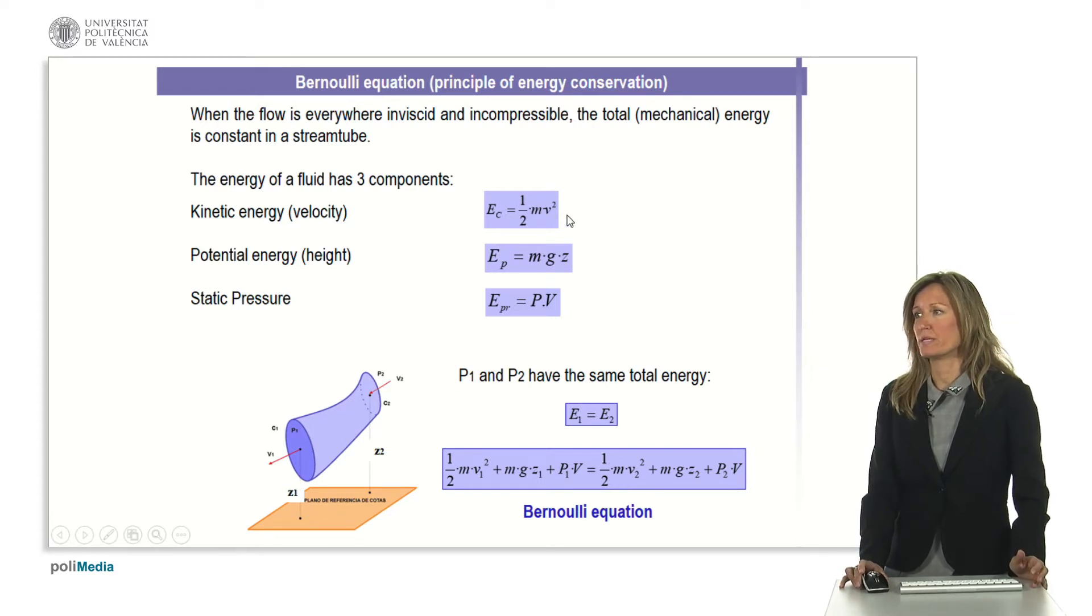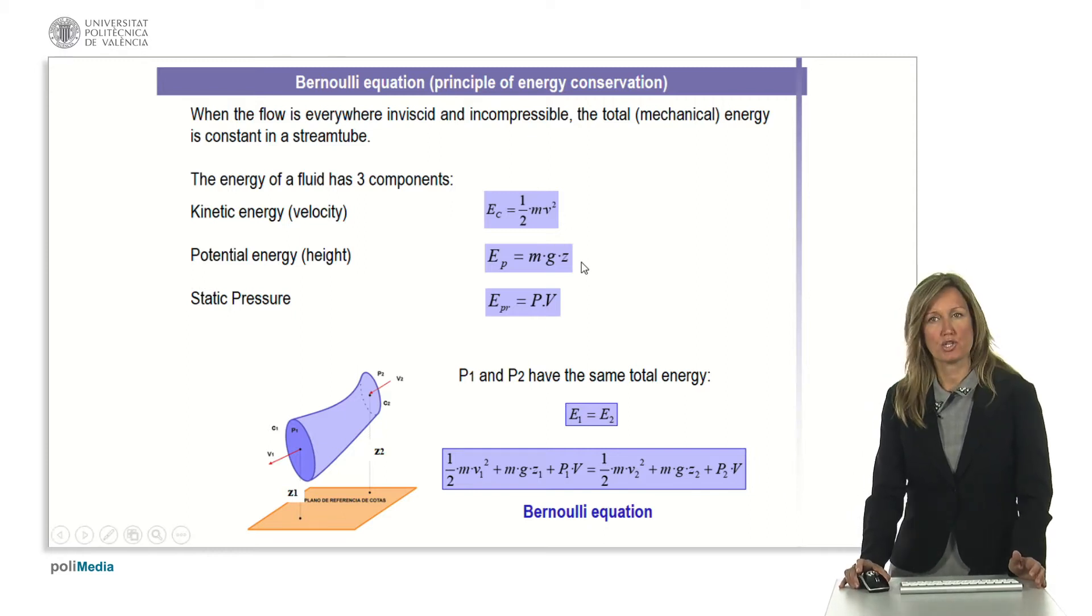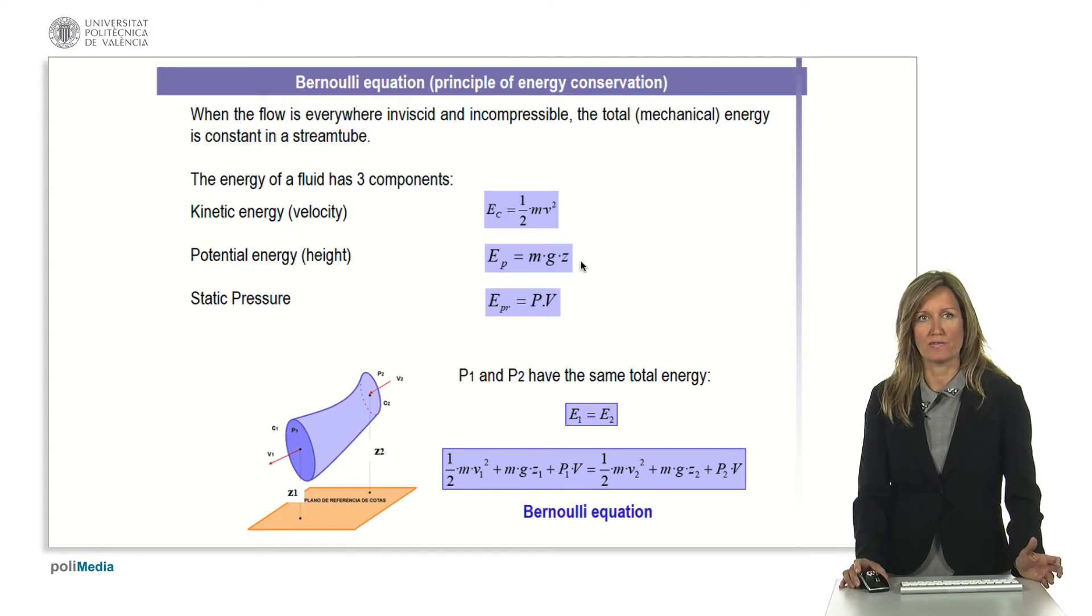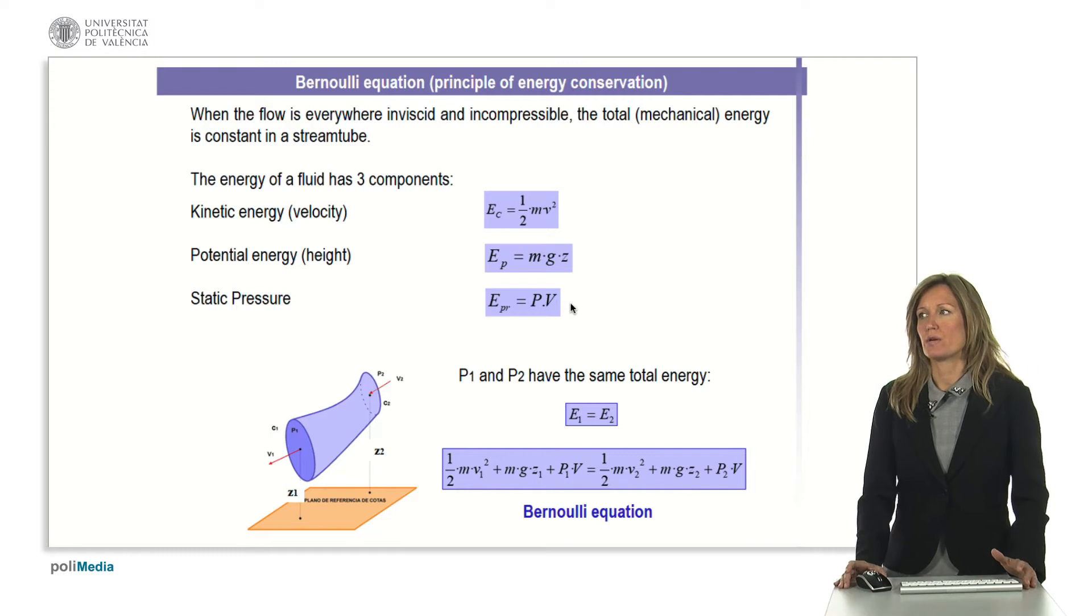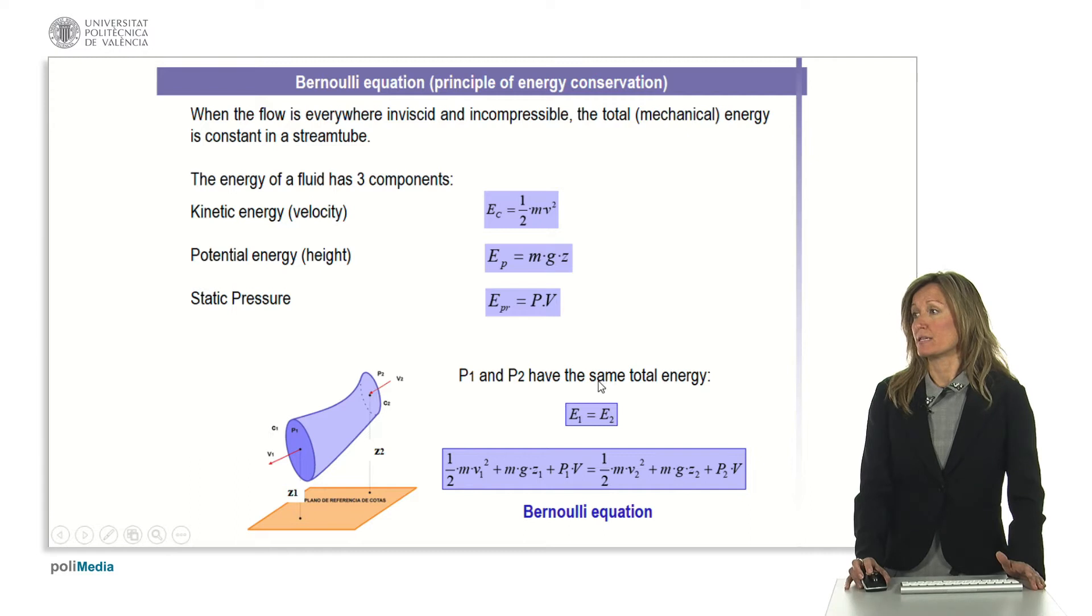The first component is the kinetic energy which has to do with the velocity, the second one is the potential energy that has to do with the height of the point of the fluid, and the last one which is specific for fluids is the one which is related to the static pressure. Then considering these three components or these three contributions, we can say that the total energy has to be the same in two different points of a conduction and this tends to be that equation, the sum of the three terms related to velocity, height and pressure.